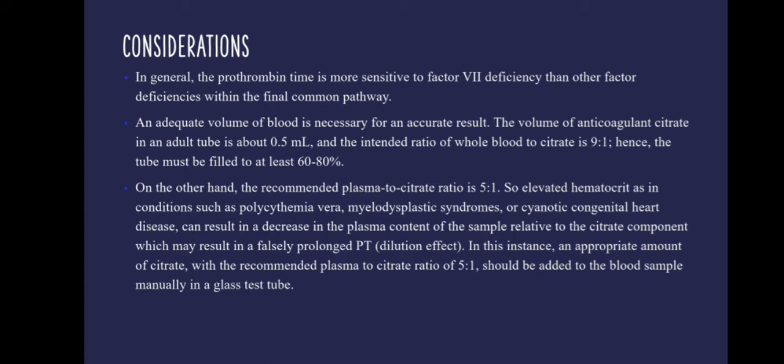On the other hand, the recommended plasma to citrate ratio is 5 to 1. So in certain conditions such as polycythemia vera, myelodysplastic syndromes, or cyanotic congenital heart diseases, there is an elevated hematocrit which can result in a decrease in the plasma content of the sample relative to the citrate component, thus resulting in a falsely prolonged Prothrombin Time. In such a case, an appropriate amount of citrate with the recommended plasma to citrate ratio of 5 to 1 is to be added to the blood sample manually in a glass test tube.